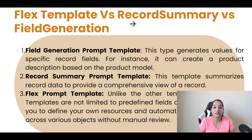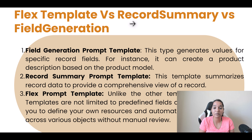Now what is flex template? Unlike other templates, it can get you data from multiple sources or multiple objects which are either related or not related to each other. Flex prompt templates are not limited to predefined fields or records. In the case of field generation and record summary, you pick one object at the beginning and only get fields related to that object. Whereas with flex template, you can select up to five objects and get all those objects' fields within your template. They allow you to define your own resources and automate content generation across various objects without manual review.